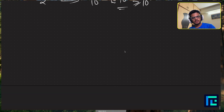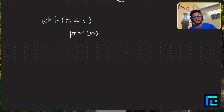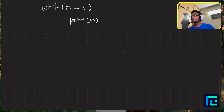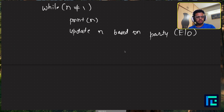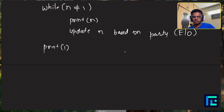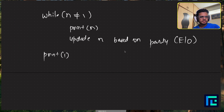The pseudocode is straightforward. Until you reach 1: print n, then update n based on its parity. If n is odd, multiply by 3 and add 1. If n is even, divide by 2. Once you break out of the loop, n is 1, so print 1 as well to complete the simulation.